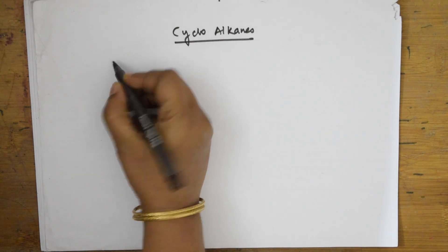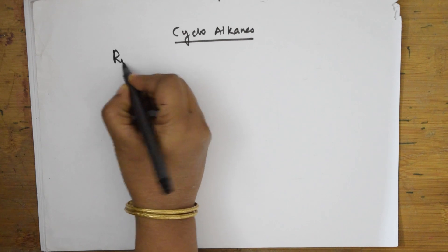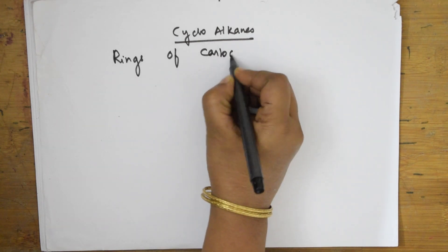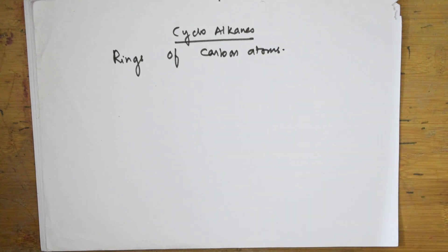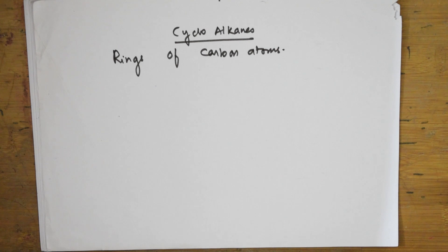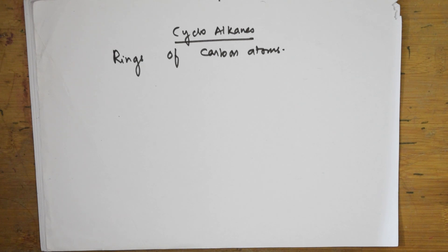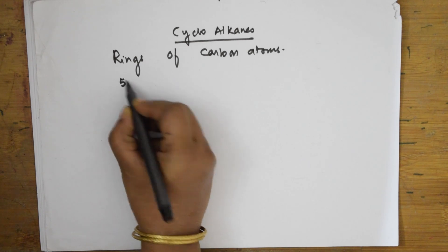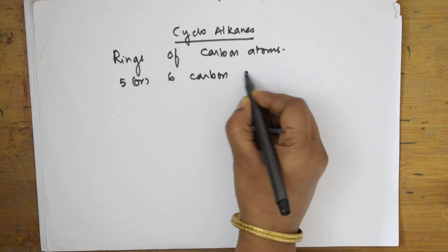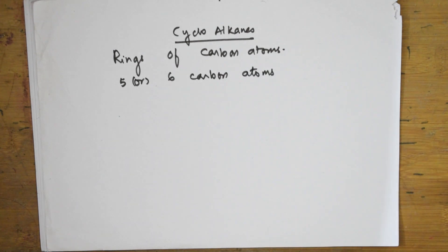Basically, what are cycloalkanes? Cycloalkanes, if I have to define in simple terms, are nothing but rings of carbon atoms. In cycloalkanes, almost up to C20 they form rings, but among them the common rings are those having 5 or 6 carbon atoms. So 5 or 6 carbon atom rings are the most common.